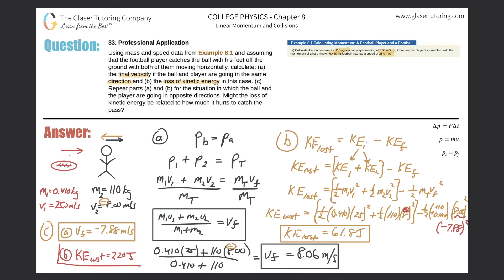Yes, the kinetic energy loss relates to how much it hurts to catch the pass. When the objects move in opposite directions, significantly more kinetic energy is lost — 220 J vs. 61.8 J. By the first law of thermodynamics, energy can't be created or destroyed; it's transferred into sound, heat, and vibration felt as pain in the player's body. Thanks for watching — please hit the subscribe button and have a great day!